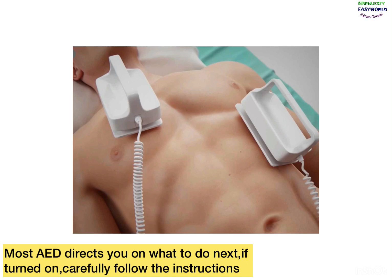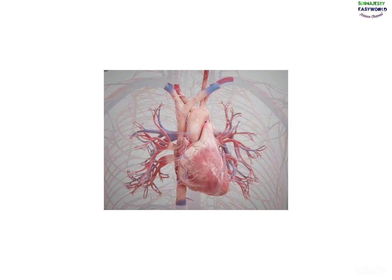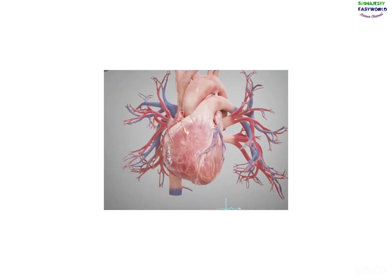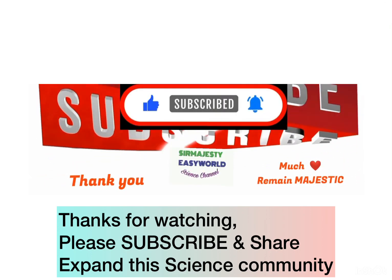The two pads — left and right — are labeled. One should be placed at the right, just below the collar, and the other one below the armpit. Then introduce the shocks. When the shocks are delivered, they are enough to restore the heart to a normal heartbeat and the life is saved.